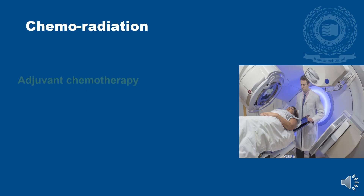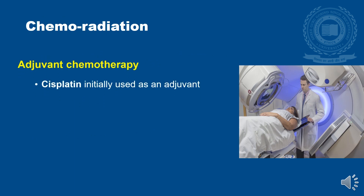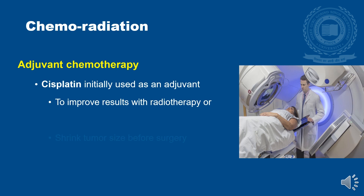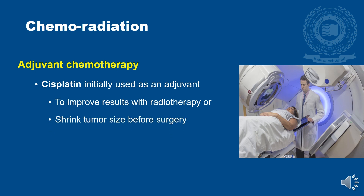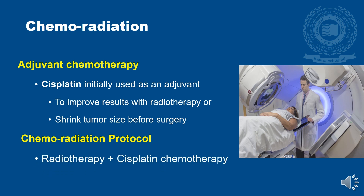Chemoradiation: Cisplatin was initially used as adjuvant chemotherapy to improve results with radiotherapy or shrink tumour size before surgery. Nowadays, the protocol is chemoradiation, where radiotherapy and cisplatin chemotherapy are administered in the same setting to minimize side effects and accentuate results. Since carcinoma cervix is preventable, prevention is very important.